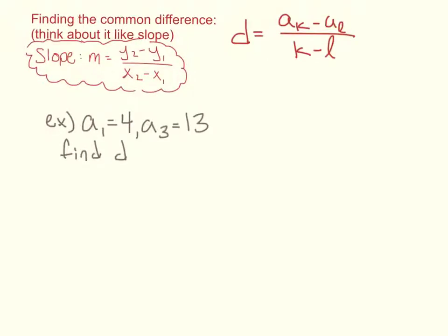All right, finding the common difference, we think about it like slope. Just like with slope, an input of x would give you an output of y. So we do the whole y₂ minus y₁ over x₂ minus x₁. With a sequence, an input of k would give us a sub k, input of l, a sub l. So we can do the outputs a sub k minus a sub l over the inputs k minus l.